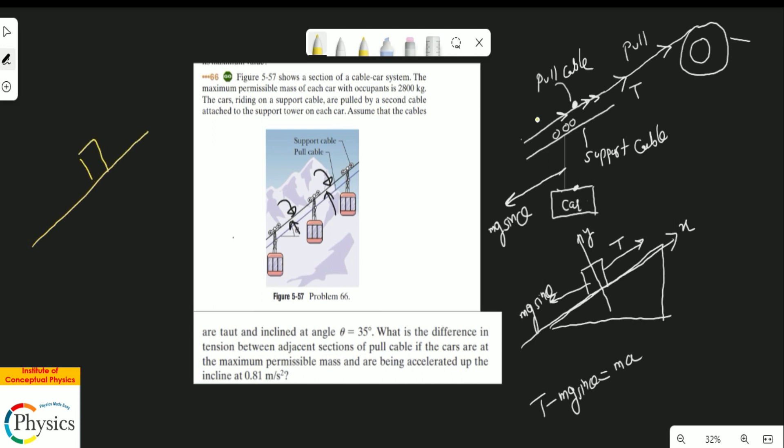If you notice the pull cable, you have this section and this section. What they're saying is the tension here is different from tension here. Obviously, if I show you a parallel diagram, because let's say this is an inclined plane, you have mass number one, then mass number two, then mass number three, and there is a pull force coming.